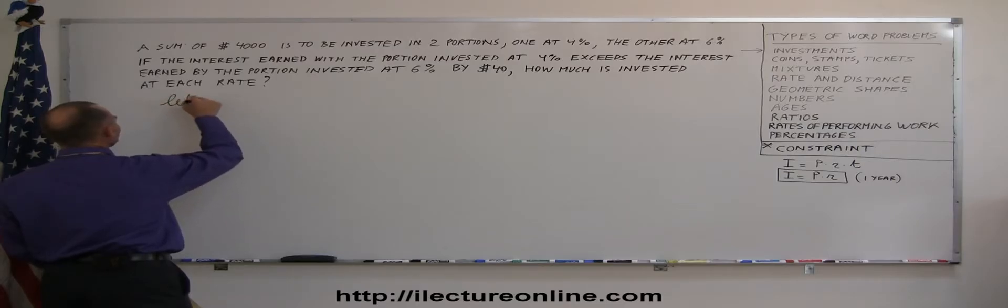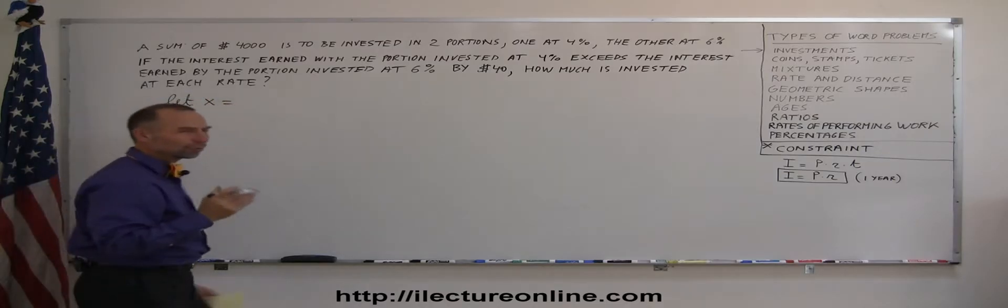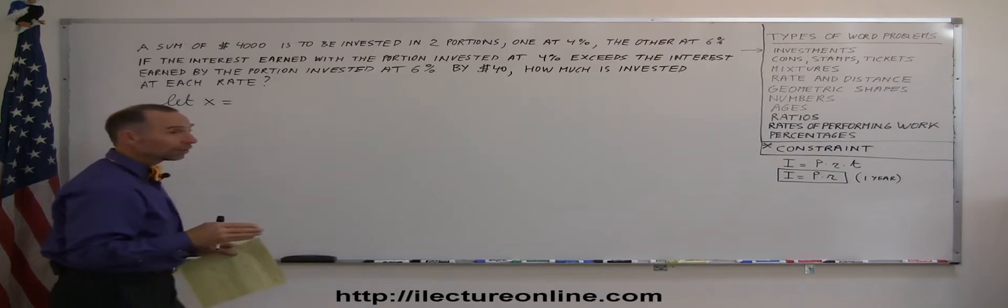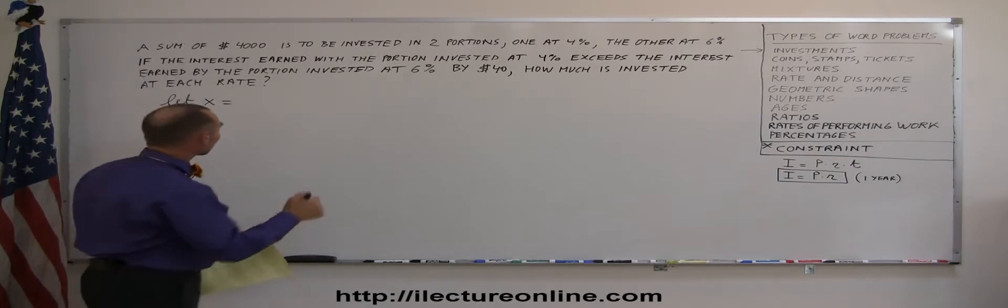We always like to start with saying, let X equal, and of course, remember we had two portions that add up to $4,000. So, let X equal the first portion.